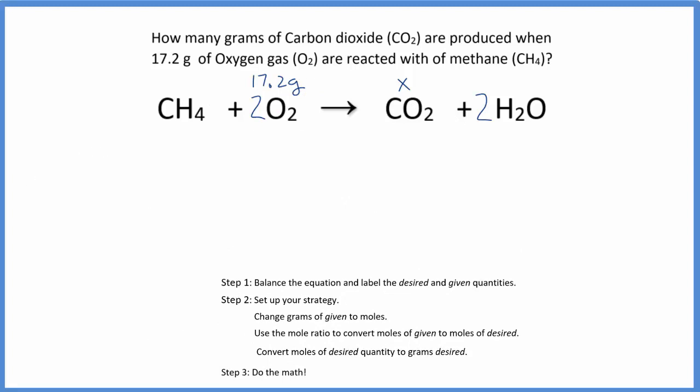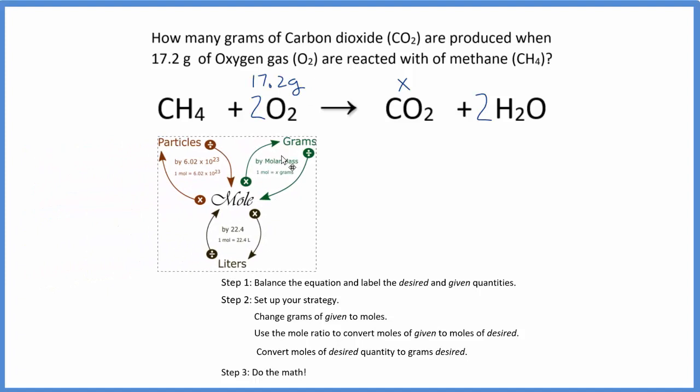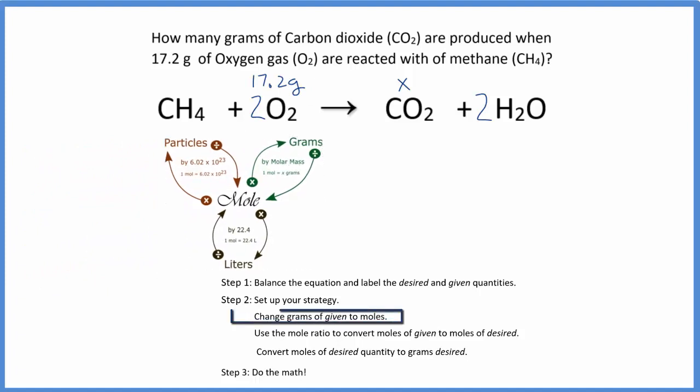And one way to help us visualize this is to use something called the mole map. So I'm going to put a mole map right here, and our first step is to convert the grams of the given to moles. So what we'll do is talk about the strategy first, then we'll do the math. So we have 17.2 grams, and to go from grams to moles, we'll divide by the molar mass. So we're going from grams to moles, and we're talking about oxygen here right now. That's our first step.